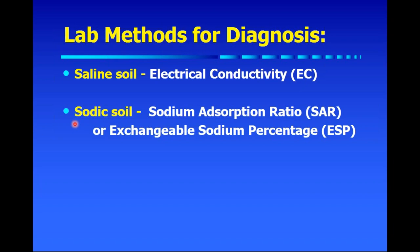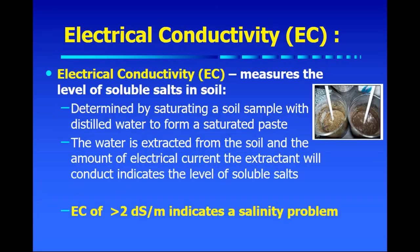For sodic soils, there are two different analyses that can be used in the lab. One is called sodium absorption ratio (SAR), and the other is exchangeable sodium percentage (ESP). We have different types of lab analyses that can be used to identify different types of salt-affected soils.